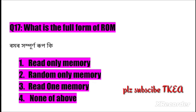Question number seventeen: What is the full form of ROM? Option one: Read Only Memory, two: Random Only Memory, three: Read One Memory, four: none of these. The right answer is number one: Read Only Memory.